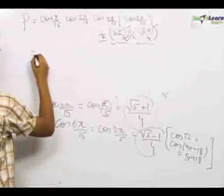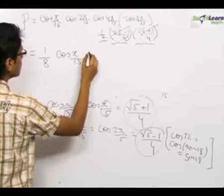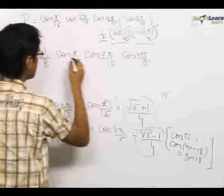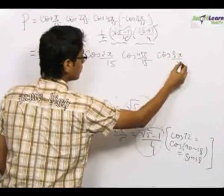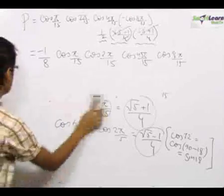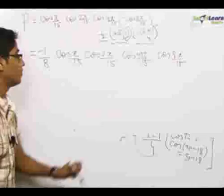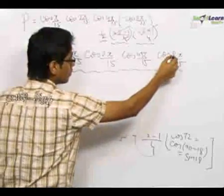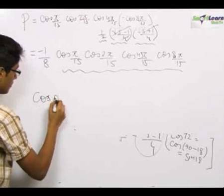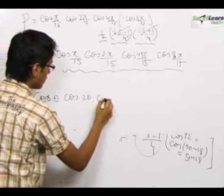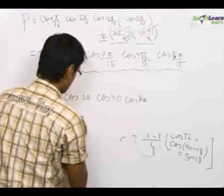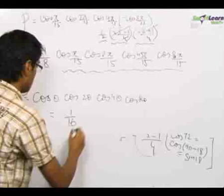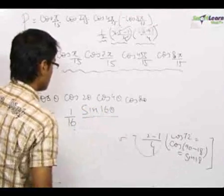This 4 gets cancelled out, so our product becomes (1/8) · cos(π/15) · cos(2π/15) · cos(4π/15) · [−cos(8π/15)]. The aim of converting cos(7π/15) into −cos(8π/15) was to create the product form cos θ · cos 2θ · cos 4θ · cos 8θ, which we know equals sin(16θ) / (16 sin θ).